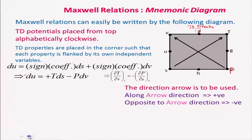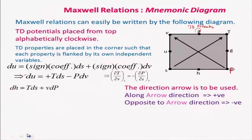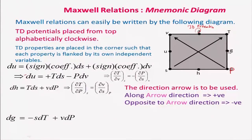From this diagram we can immediately get the Maxwell relation ∂T/∂V|S = −∂P/∂S|V. Similarly, for enthalpy: H has independent variables S and P. The coefficient for dS is T (positive), and for dP the coefficient is V (also positive). So dH = T dS + V dP.